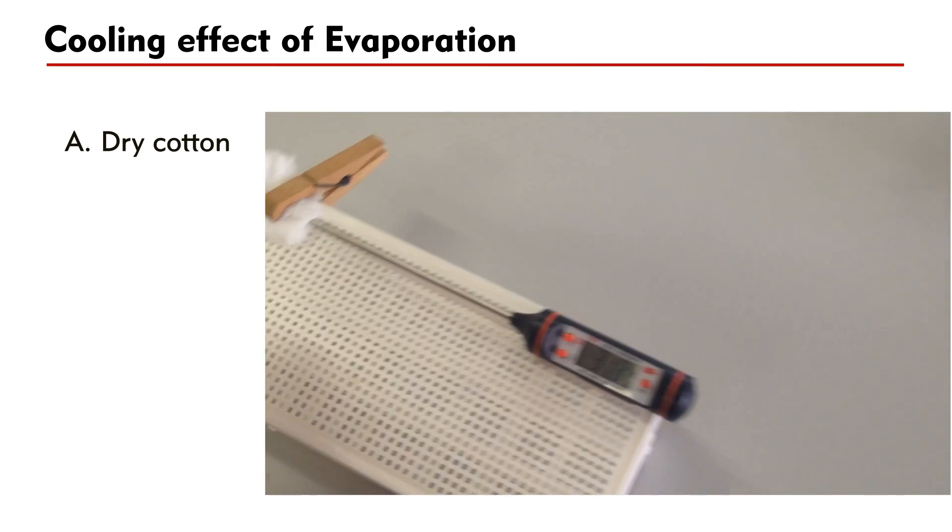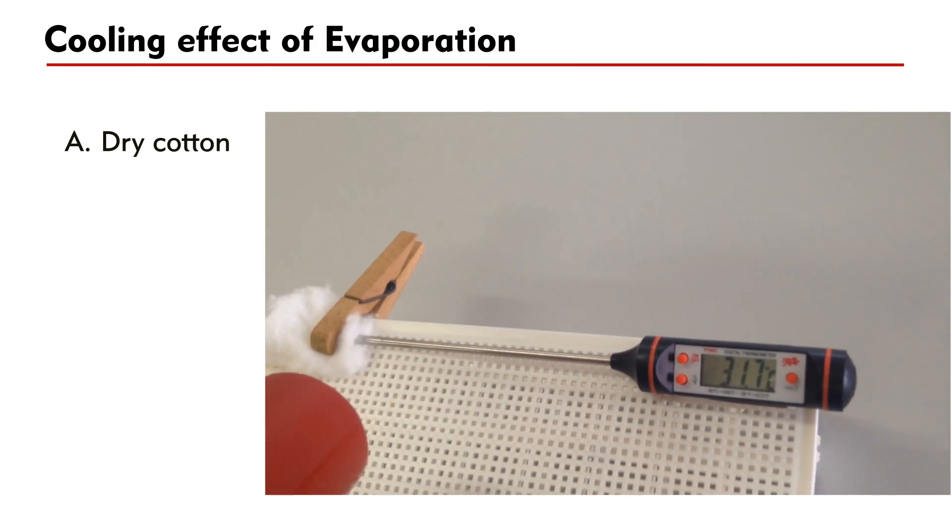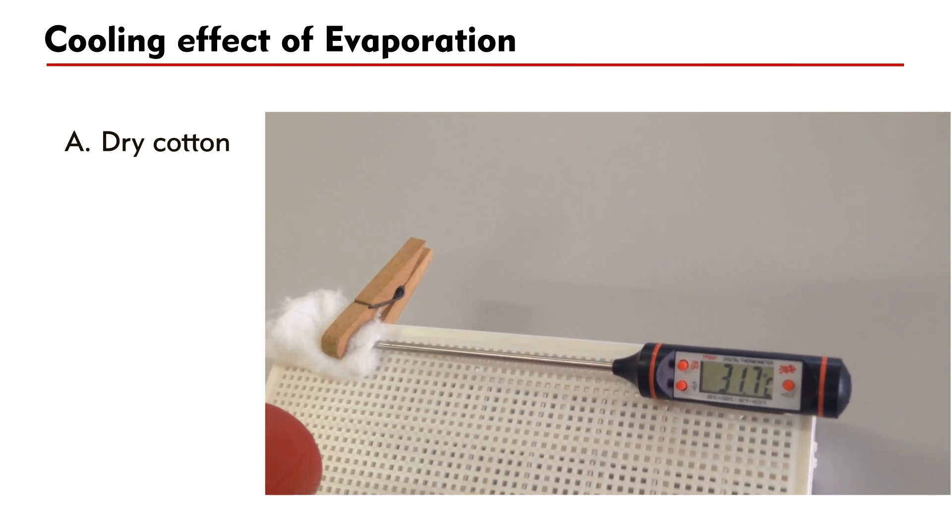Look at this experiment. A piece of cotton is wrapped around the tip of a temperature sensor. When the hair dryer is turned on, there is no noticeable change in temperature.